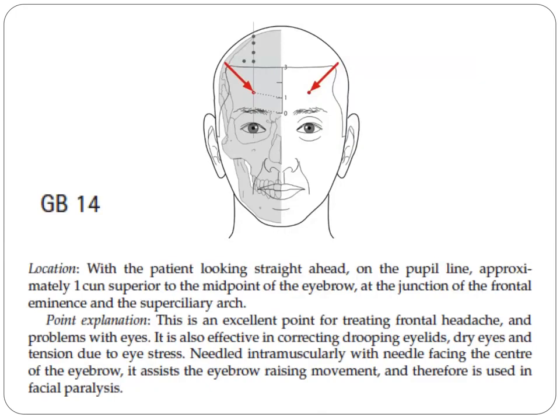Next point is GB14. It is located with the patient looking straight ahead, on the pupil line, approximately one cun superior to the midpoint of the eyebrow, at the junction of the frontal eminence and the superciliary arch. This is an excellent point for treating frontal headache and problems with the eyes. It is also effective in correcting drooping eyelids and dry eyes due to eye stress, needled intramuscularly with the needle facing the center of the eyebrow. It assists the eyebrow-raising movement and therefore is used in facial paralysis.